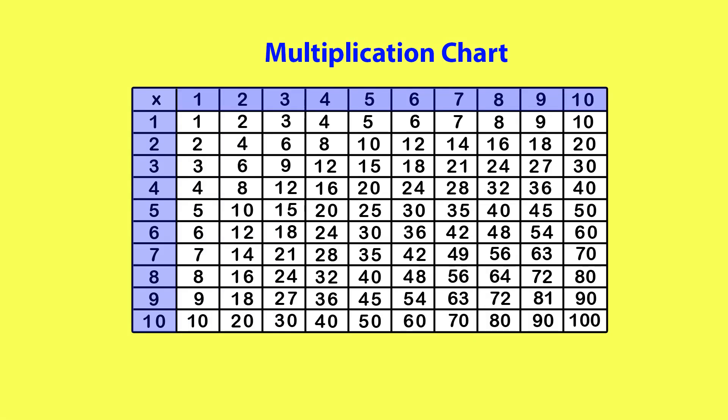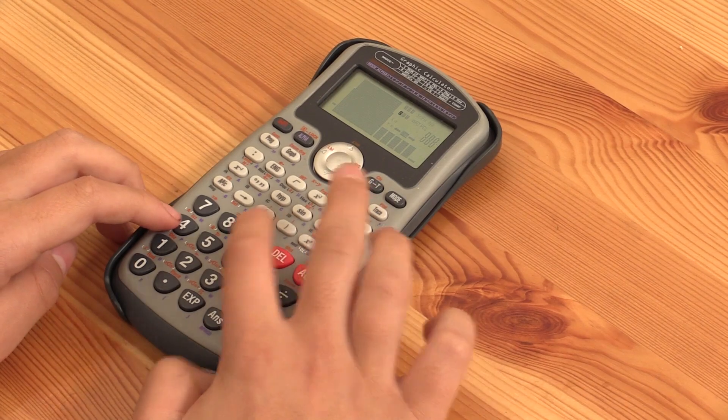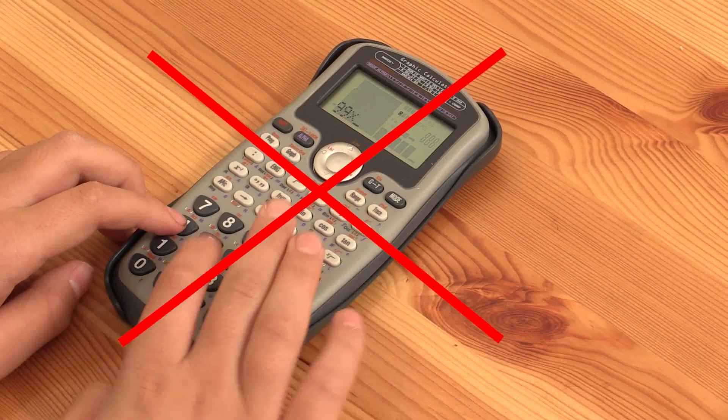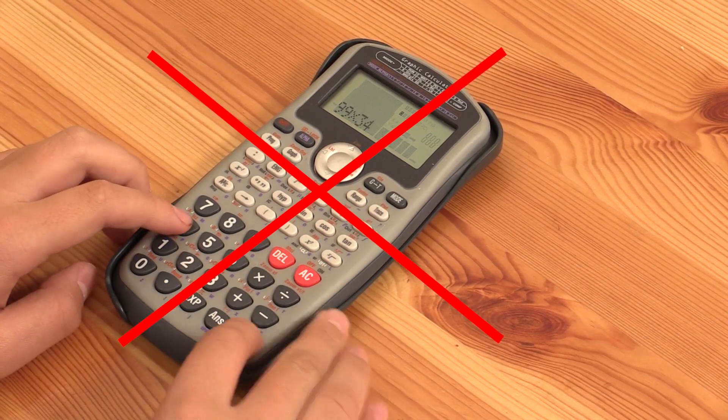You'll need to know your times tables. If you're stuck, you can look up a multiplication chart, but you can't use a calculator because there were none 2,000 years ago. I'm just going to start multiplying and show you how to fill in the blanks.